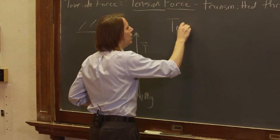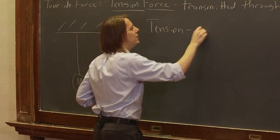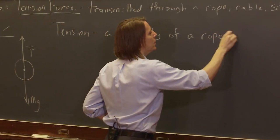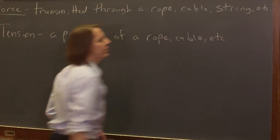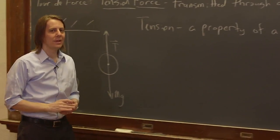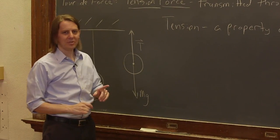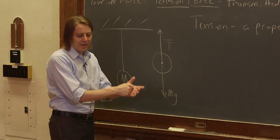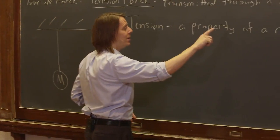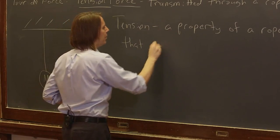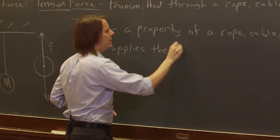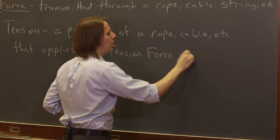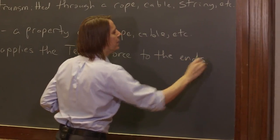So tension really is a property of a rope, cable, etc. Tension itself technically is not a force. It's actually a scalar property that is in newtons. It doesn't really become a force until you attach the end of the cable to something. And then it applies a force. So it's a property of this thing that applies the tension force to the ends, to whatever is attached to the ends.